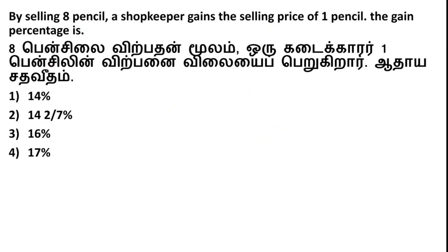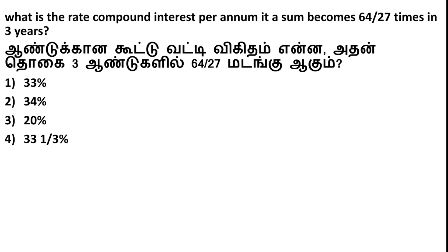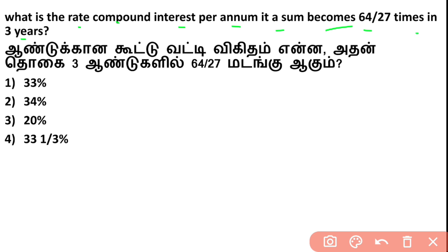Next question: What is the rate of compound interest per annum if a sum becomes 64 by 27 times in 3 years? How do you understand the compound interest formula when a sum becomes that ratio in 3 years? Let's see how to approach this in the exam.